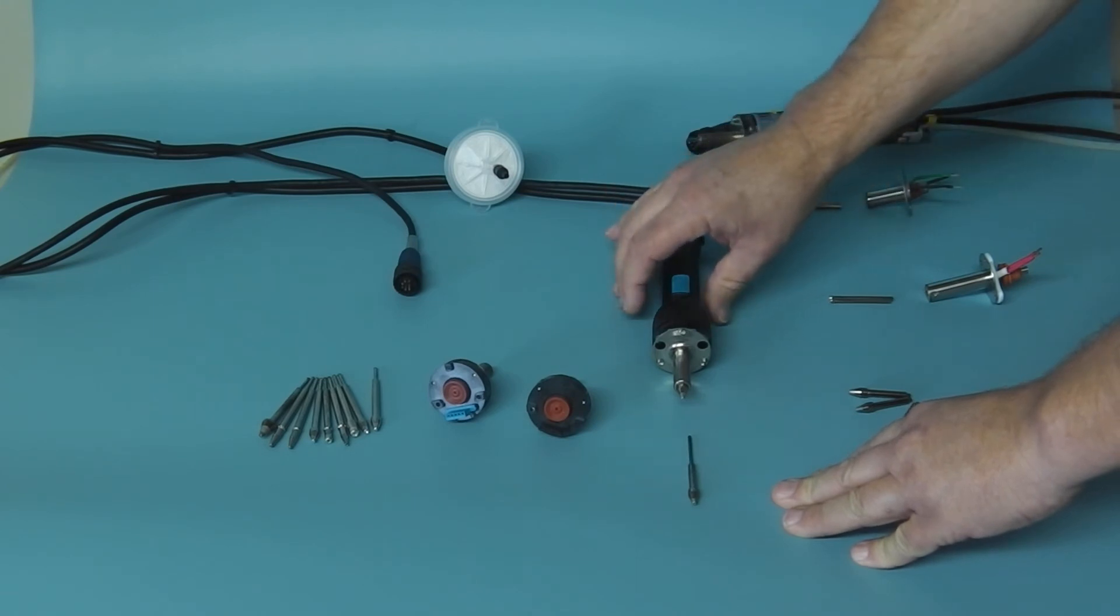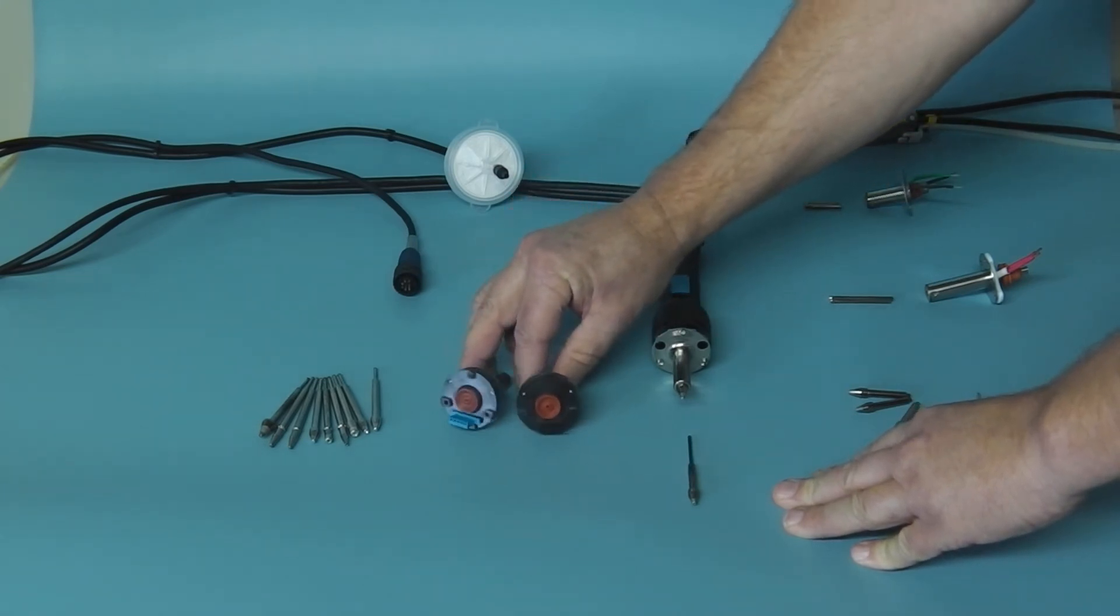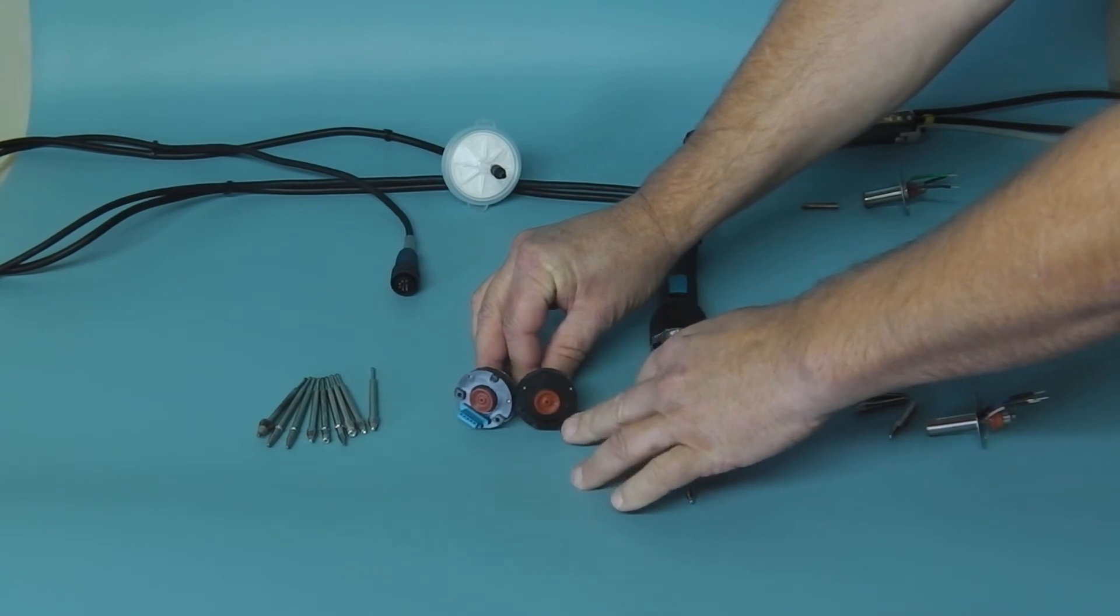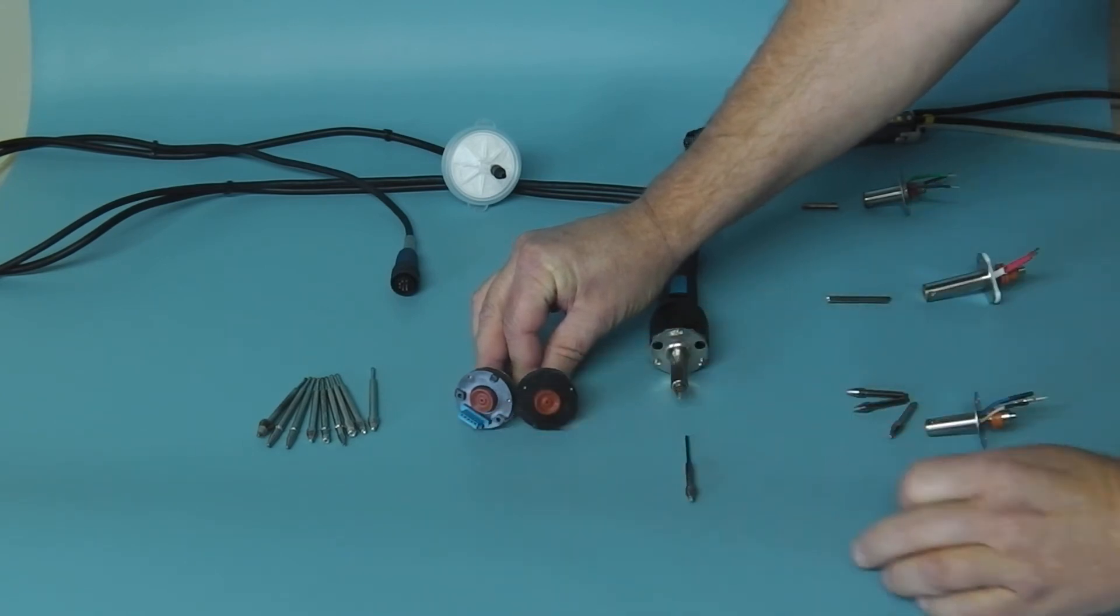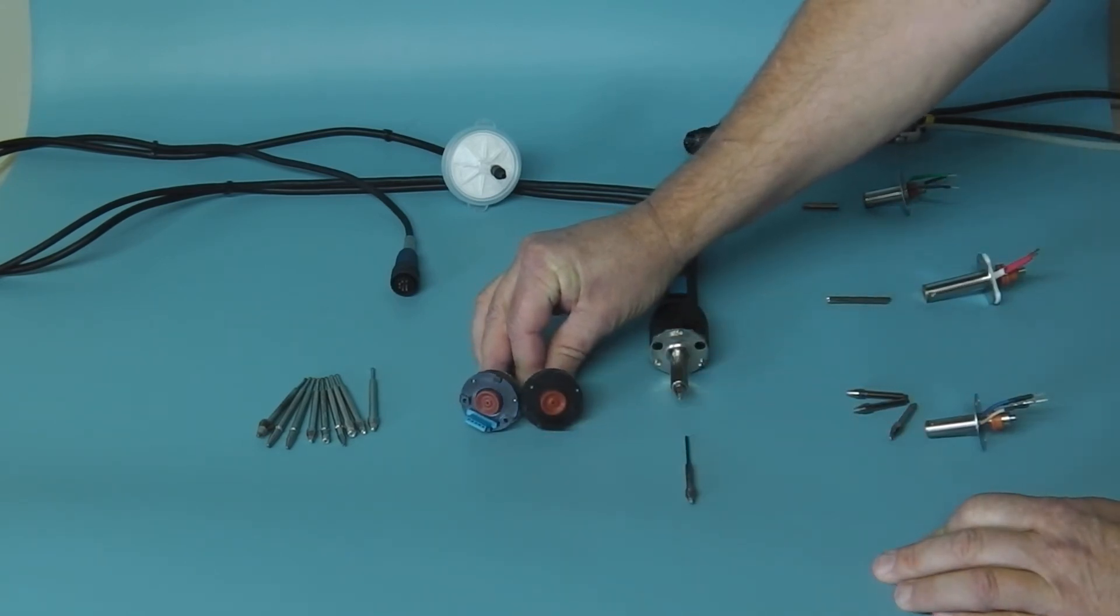The main one being the type of element. You can see here this element has a black plug and this one has a blue plug. That's really the main difference in them.